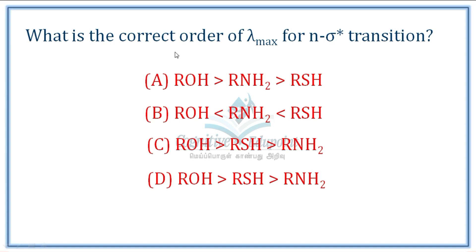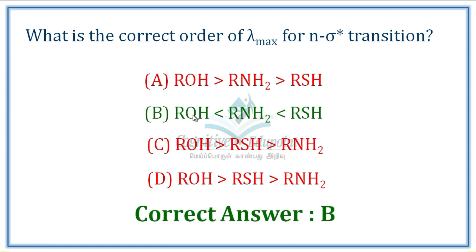Next question: What is the correct order of λmax for the N→σ* transition? This applies to saturated compounds with lone pairs of electrons. Comparing the molecular orbitals of ROH, RNH, and RSH: energy is highest for ROH, then RNH, and least for RSH. Since wavelength is inversely related to energy, the λmax order is RSH > RNH > ROH — meaning RSH shows the longest wavelength. Correct answer is B.